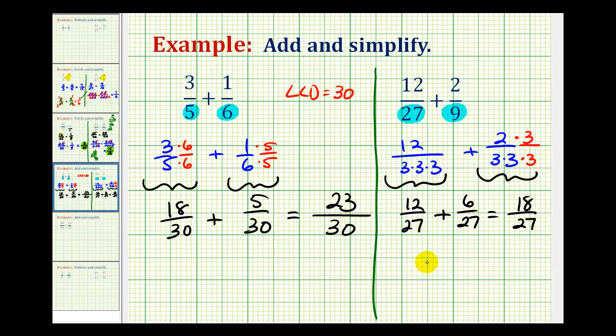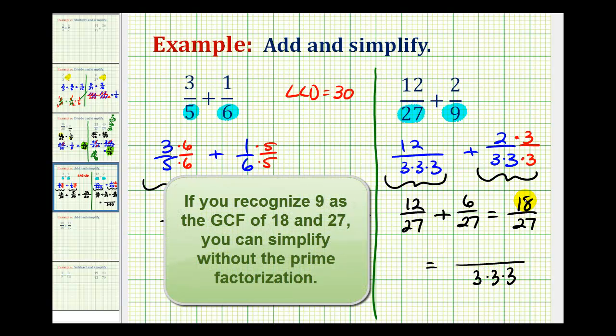But we can't forget to simplify here. We saw above the prime factorization of 27 would be 3 times 3 times 3, and the prime factorization of 18 would be 2 times 3 times 3.